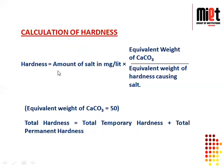First, check which salts are responsible for hardness in the water sample. Then calculate the mass of the hardness-causing salt multiplied by the equivalent weight of calcium carbonate divided by the equivalent weight of the hardness-causing salt. Temporary hardness is caused by bicarbonates of calcium and magnesium. Permanent hardness is caused by chlorides, sulfates, and nitrates of calcium and magnesium. Adding both gives the total hardness.